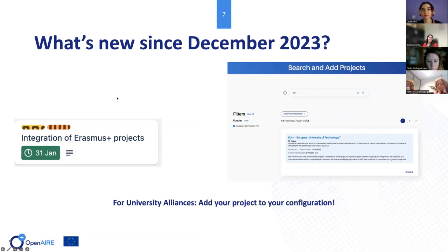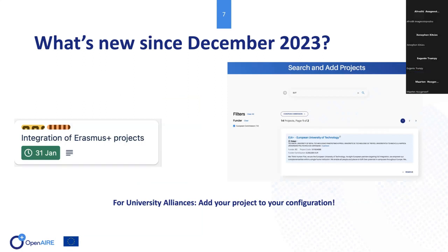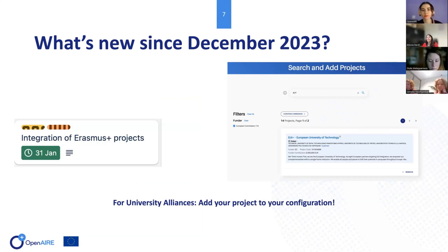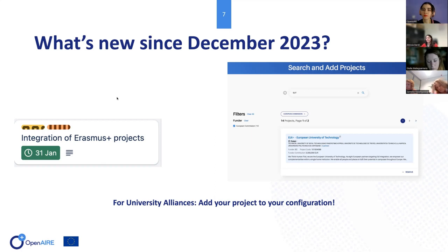This is very useful for university alliances using OpenAIR Connect: we have integrated the projects from the Erasmus Plus program of the European Commission. This means you can now add Erasmus Plus projects in your configuration so that all the outputs funded by those projects are included in your gateway. I recommend all university alliances to select their projects in their configuration.